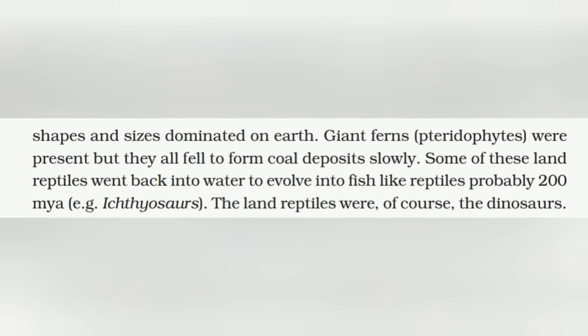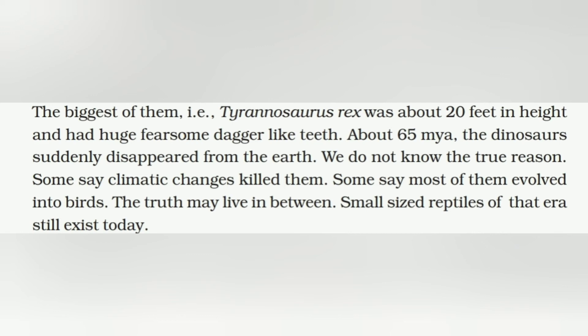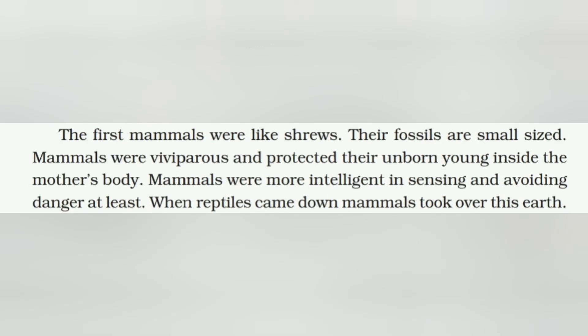The land reptiles were, of course, the dinosaurs. The biggest of them, Tyrannosaurus rex, was about 20 feet in height and had huge, fearsome dagger-like teeth. About 65 million years ago, the dinosaurs suddenly disappeared from the Earth. We don't know the true reason — some say climatic changes killed them, some say most of them evolved into birds; the truth may lie in between. Small-sized reptiles of that era still exist today. The first mammals were like shrews — their fossils are small-sized. Mammals were viviparous and protected their unborn young inside the mother's body, and were more intelligent in sensing and avoiding danger. When reptiles declined, mammals took over the Earth.